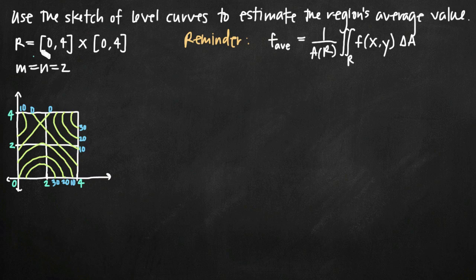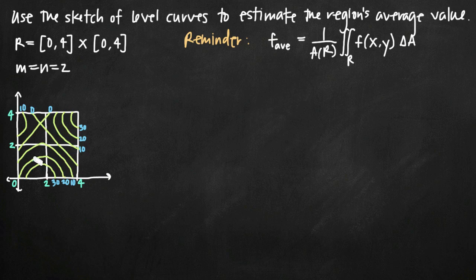We've been told that our region is defined from 0 to 4 for x and from 0 to 4 for y, so the region is enclosed by this rectangle. We've also been told that m equals n equals 2, which means we're going to be dividing this region into two rectangles across for x by two rectangles across for y.